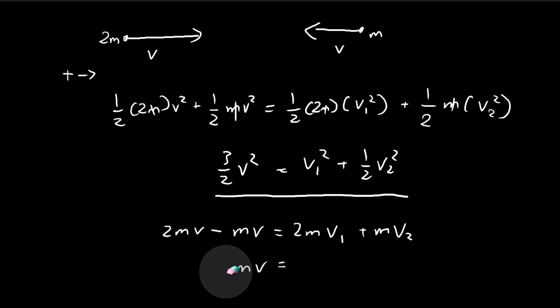So simplifying this, actually I can get rid of the m as well. We get 2v1 plus v2. So now we have two equations and two unknowns. So now we can solve for v1 and v2.